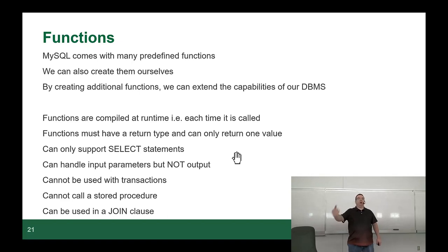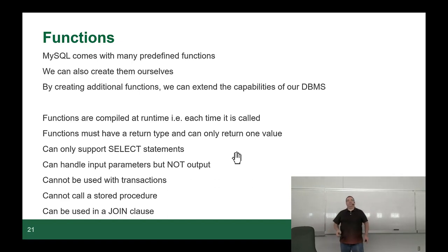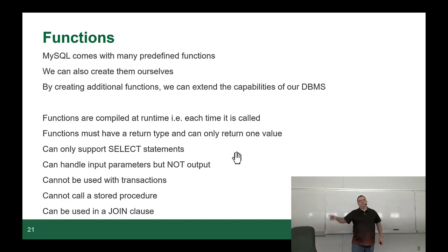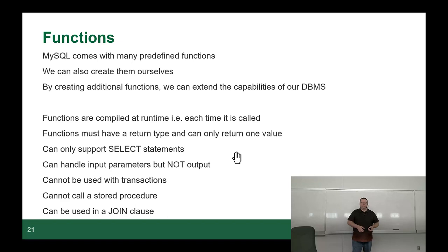Functions must have a return type and can only return one value. They can only support select statements — you use a function as part of a select instead of calling it. They can handle input parameters but do not have output parameters. You pass a value in, it will return a value, but it won't pass values back out. Theoretically functions can't be used in a transaction, but they can be used in a join clause because they're just a function used as part of your select statement.